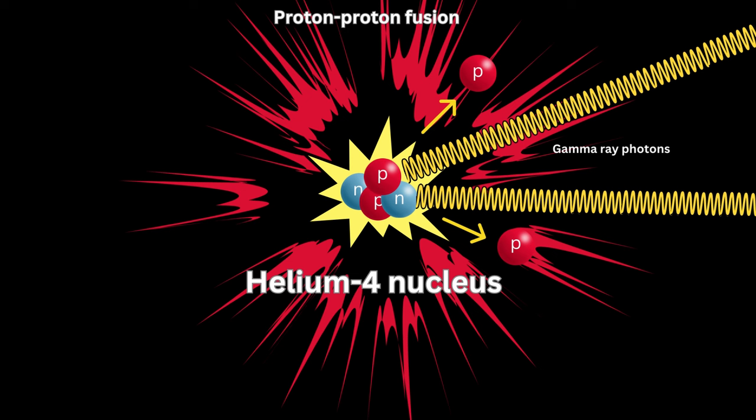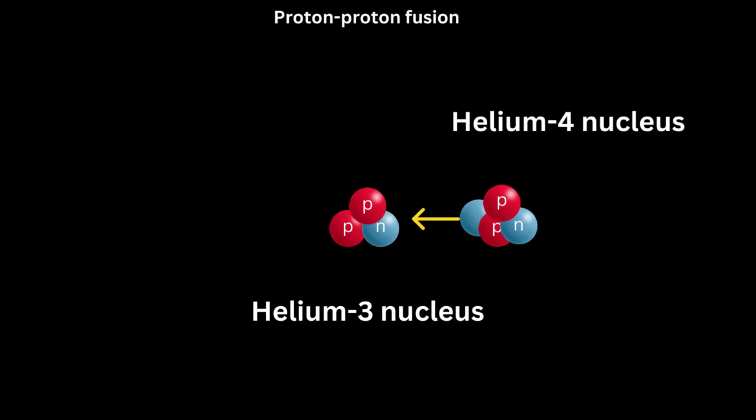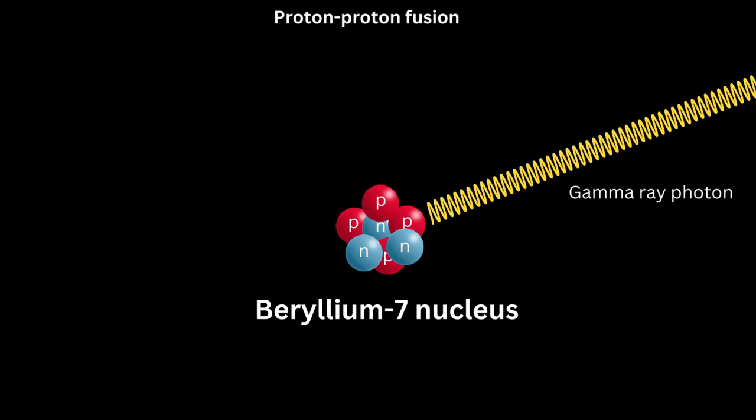Path two: Helium-3 capture. A helium-3 nucleus captures a helium-4 nucleus to create a beryllium-7 nucleus, which contains four protons and three neutrons. A gamma ray photon is released by this process.